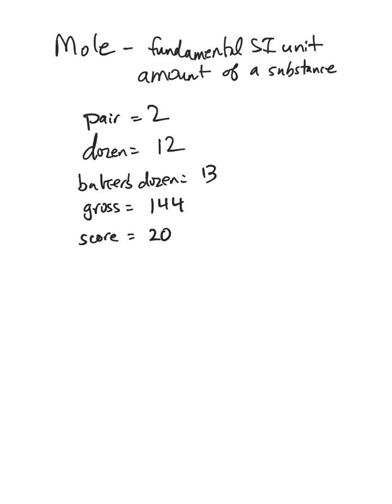So four score and seven, four times 20 is 80, plus seven is 87. So if you add 87 to 1776, you get 1863, and that's when the Gettysburg Address took place.